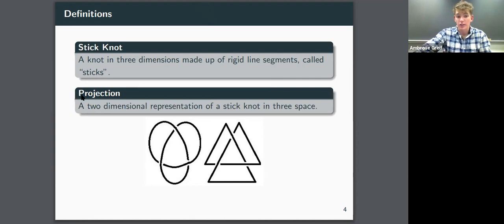So a projection is a two-dimensional representation of a stick knot in three space. So knots are three-dimensional objects, so we have to have a way to represent them on a piece of paper, so we can more easily visualize them and manipulate them. And so we do this using projections. And we simply represent parts of a knot that cross underneath another part of the knot by making breaks in the line segment, as shown here.